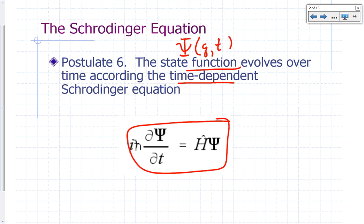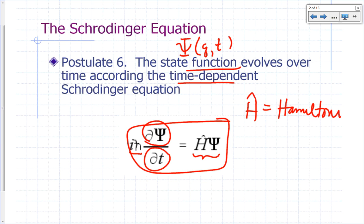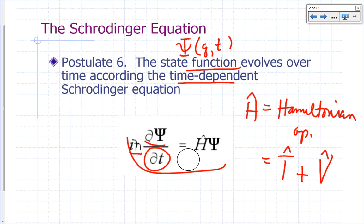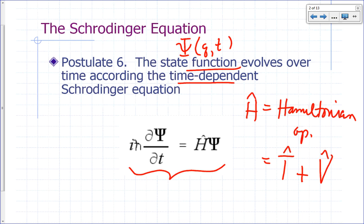The time-dependent Schrödinger equation is: i h-bar times the partial derivative of psi with respect to time equals H-hat psi, where H-hat is the Hamiltonian operator — the operator corresponding to the sum of the kinetic energy operator and the potential energy operator. This is one of the most basic equations you need to know by heart.